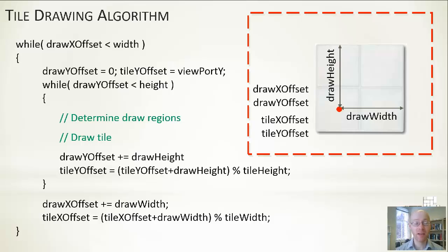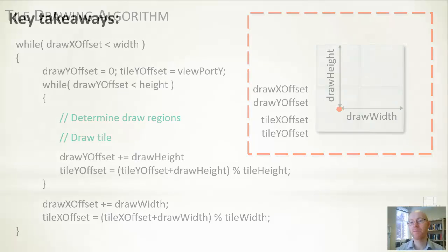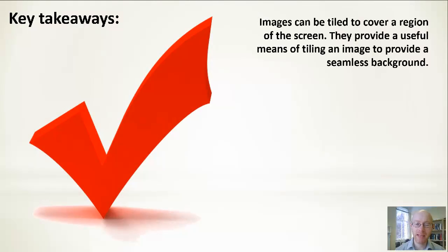And that's it. That's the complete algorithm in all of its glory. It's reasonably straightforward. The main takeaway is that images can be tiled to cover a region of the screen quite often. We want to do that by way of a nice graphical effect. The other main approach is where you have a rectangle or grid and you're drawing out or populating each square within the grid with a different image. That too provides another approach.